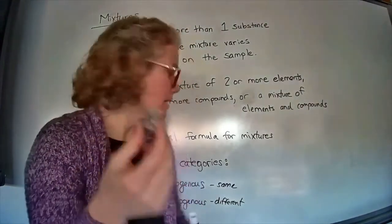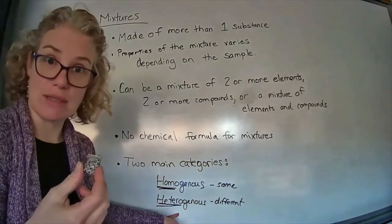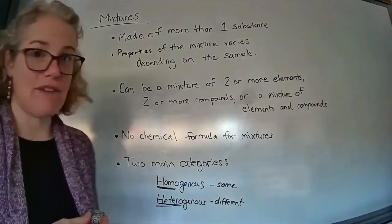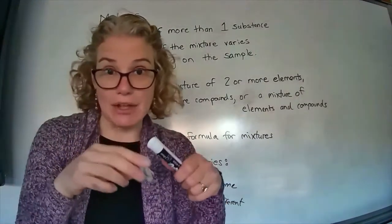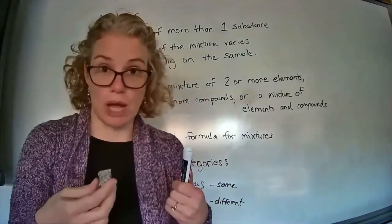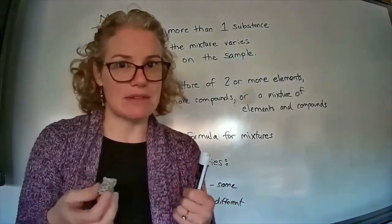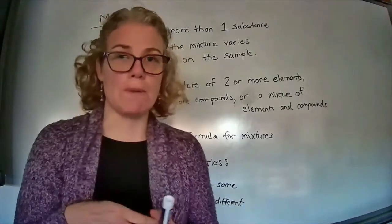Whereas if I put sugar and salt together, that's a mixture of two compounds, I can't really see the different pieces, so I might call that one a homogeneous mixture. Or if I put sugar in water and stir it up, like I'm making Kool-Aid, you can't see the different pieces, so that would be homogeneous.